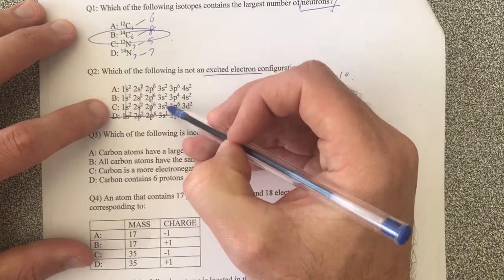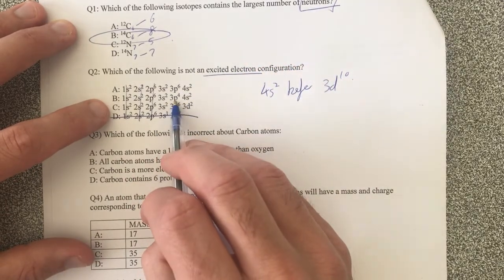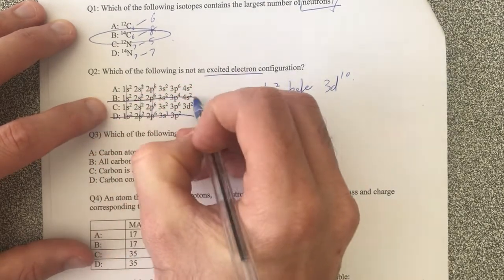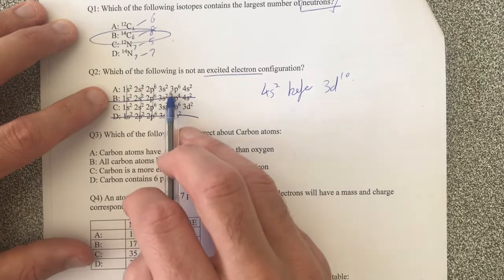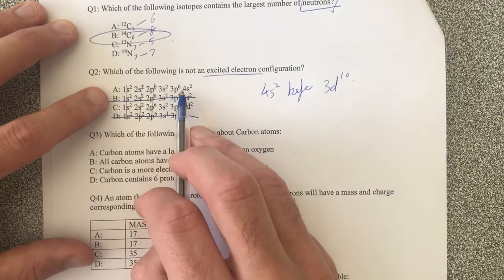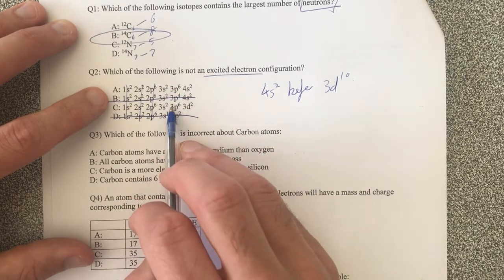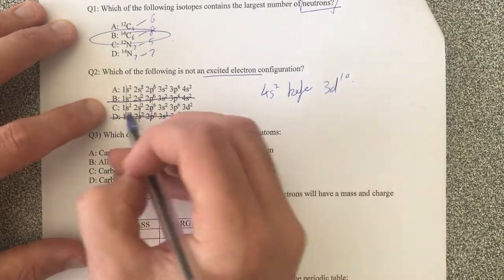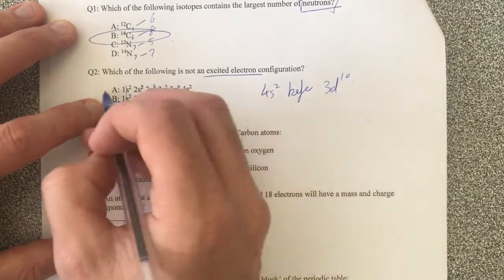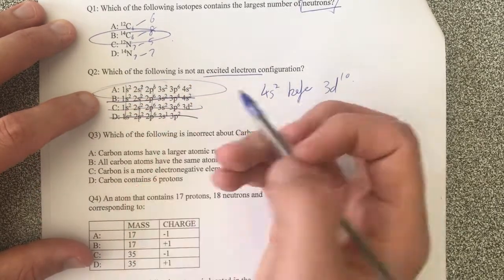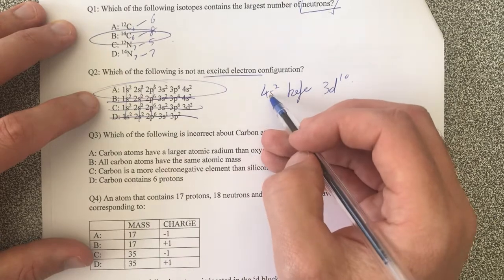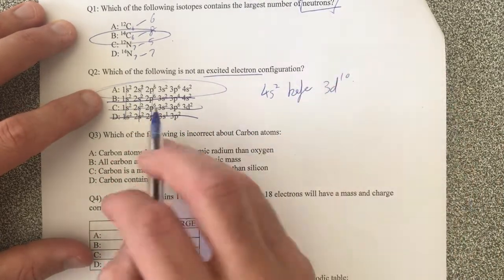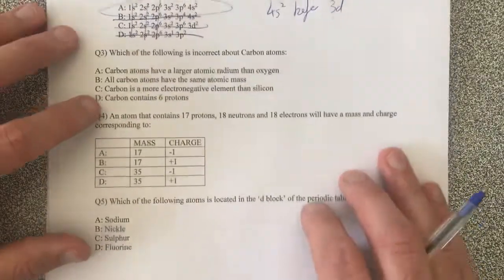Then I get to these two here. This guy should be 3p6 before we get to the 4s. So that's excited. And then I've got this guy here. Is it going from the 3p6 to the 4s2 or is it going from 3p6 to 3d2? Well this one is excited because this is the actual correct filling system. 4s2 comes before 3d10. So if you were to fill it up as the ground state, this is what you would have. So that makes sense.